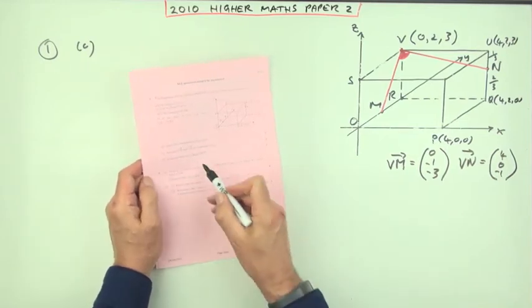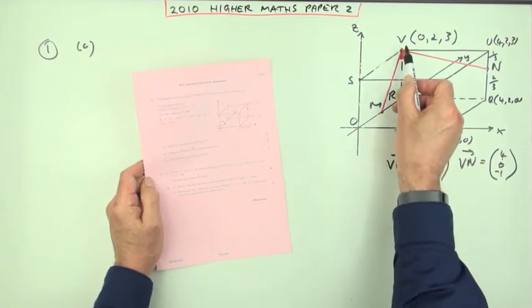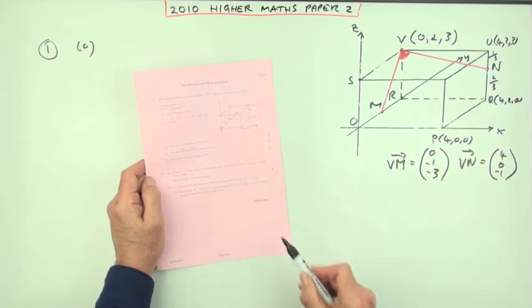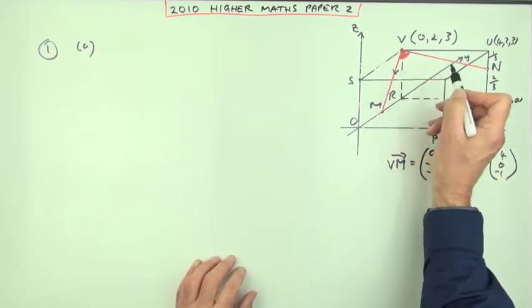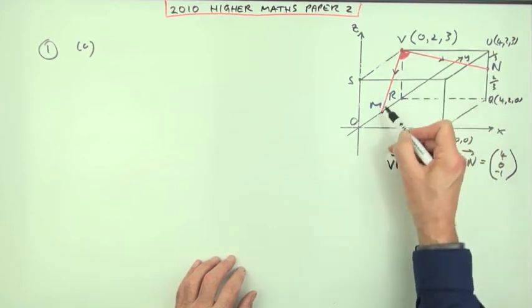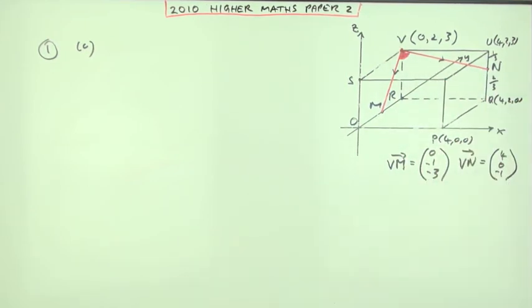Part C. Calculate the size of angle M, V, N for five marks. Well that means I want the vectors that radiate away. I want VM and VN and that's precisely what I've got.